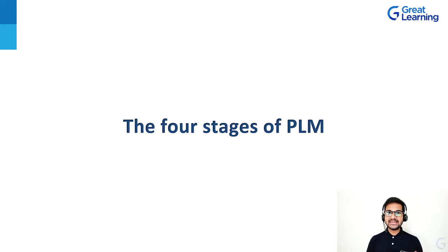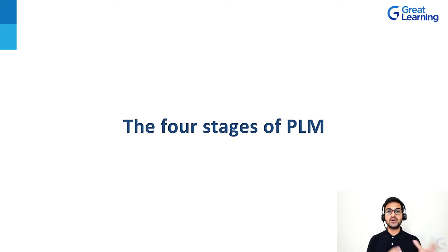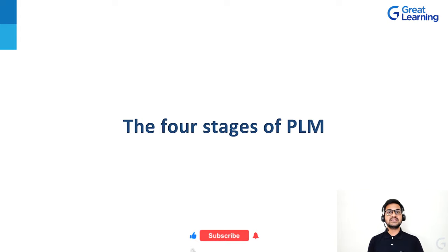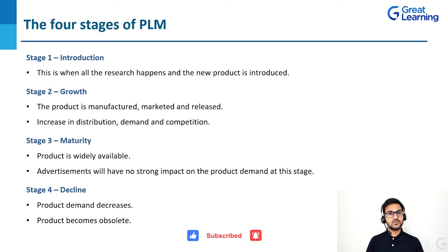Now that we have understood product lifecycle management and the stages of product development, it is time to discuss the main steps in product lifecycle management. These are divided into four steps: number one is introduction, then growth, then maturity, and then finally decline. These are the four major steps in PLM or product lifecycle management.